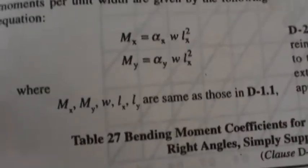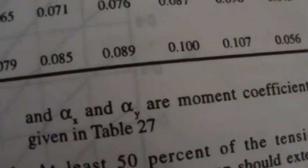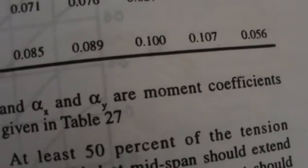You need not remember it. Okay. Now we will try to see how to calculate these alpha X and alpha Y. Alpha X and alpha Y are moment coefficients given in table number 27.